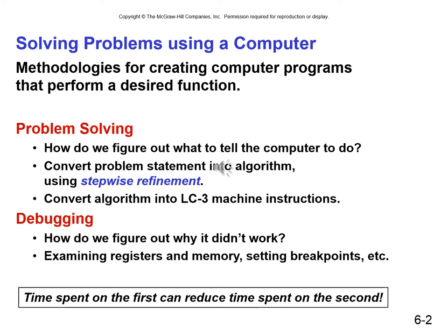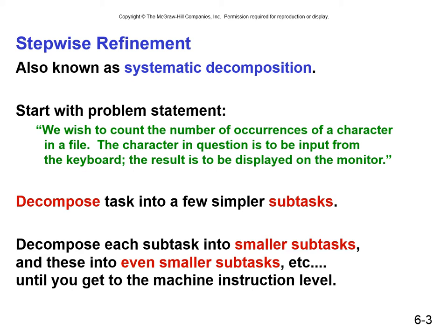Stepwise refinement, also known as systematic decomposition, is the process of starting with our problem statement or set of requirements, and then decomposing that into specific tasks that can be decomposed into very simple tasks that once again become trivial to implement using one of the basic programming constructs we're learning in this class. Eventually, we will get from a problem statement into tasks, then subtasks, then even smaller subtasks, until we get into actual instructions.